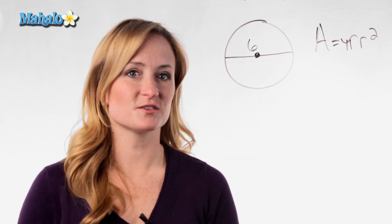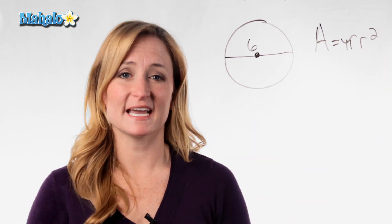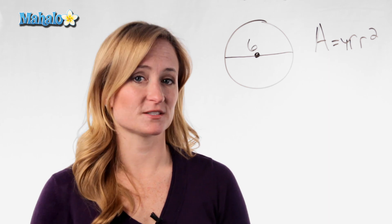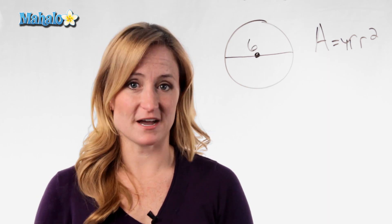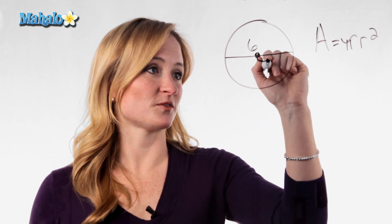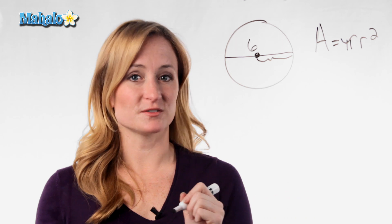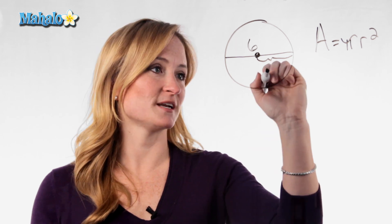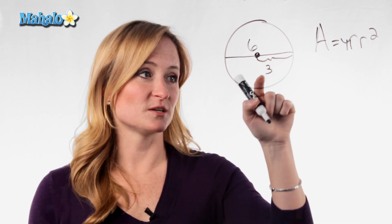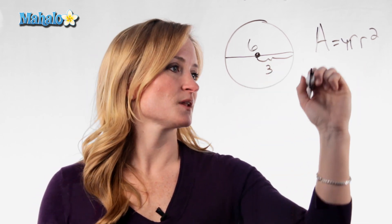So if this were our circle, the only information we have is a diameter of 6. That means you need to find your radius. We know that the radius is half of the diameter, so in this case our radius would be 3. We need to plug that into our formula.